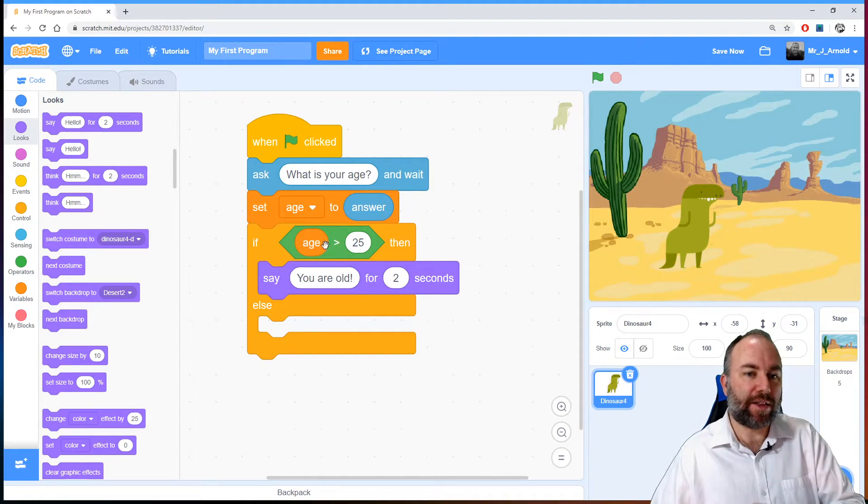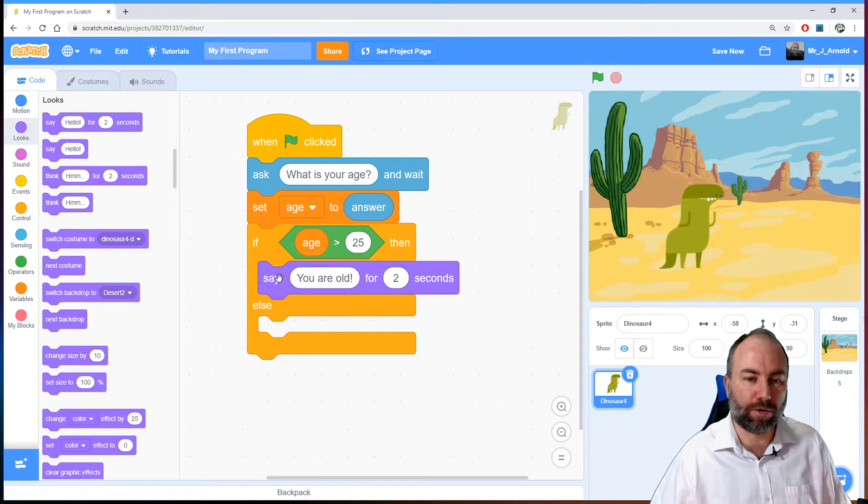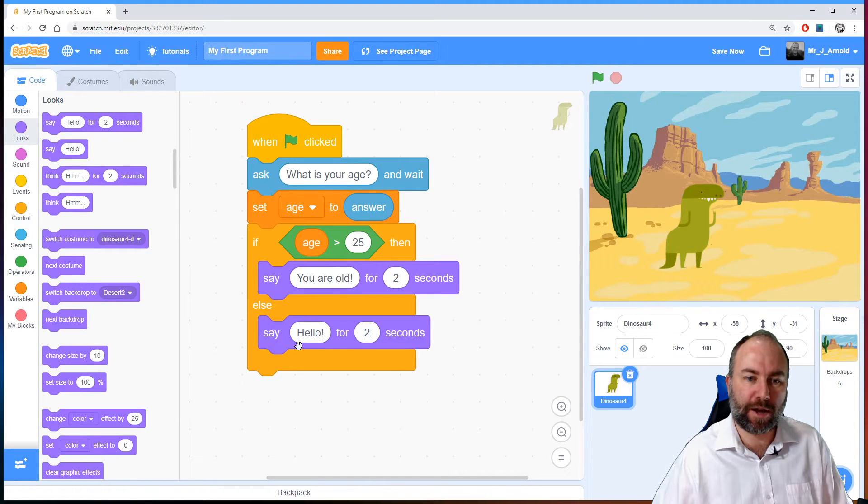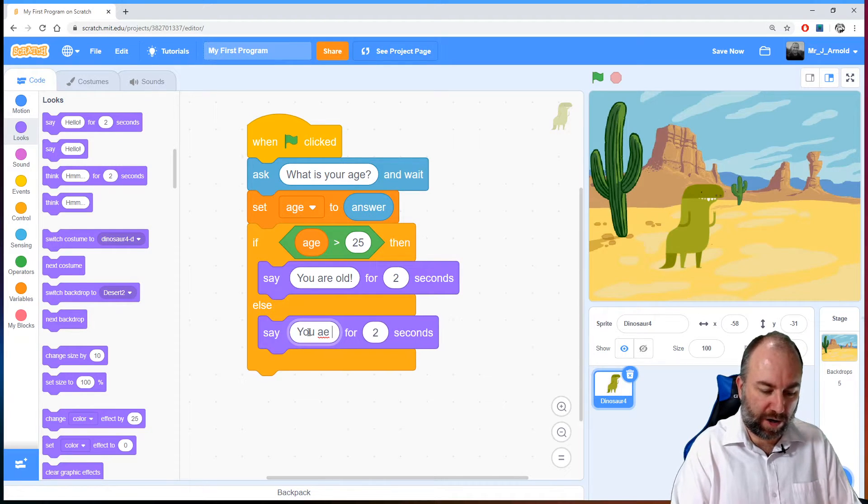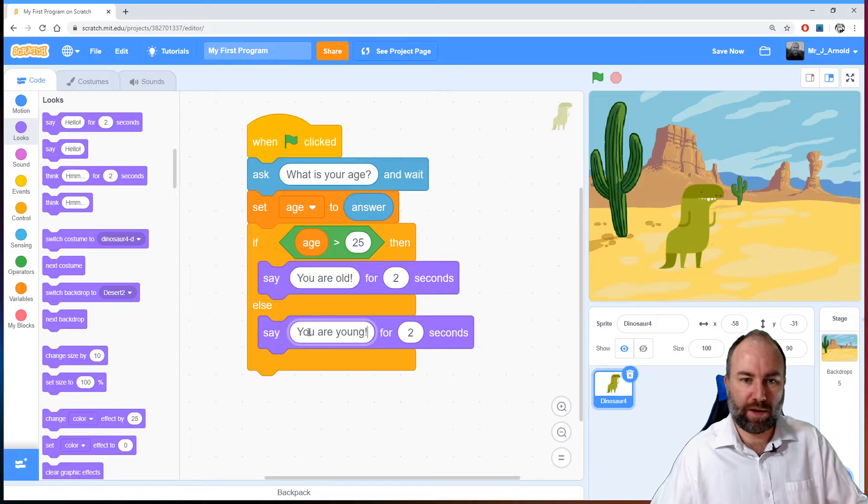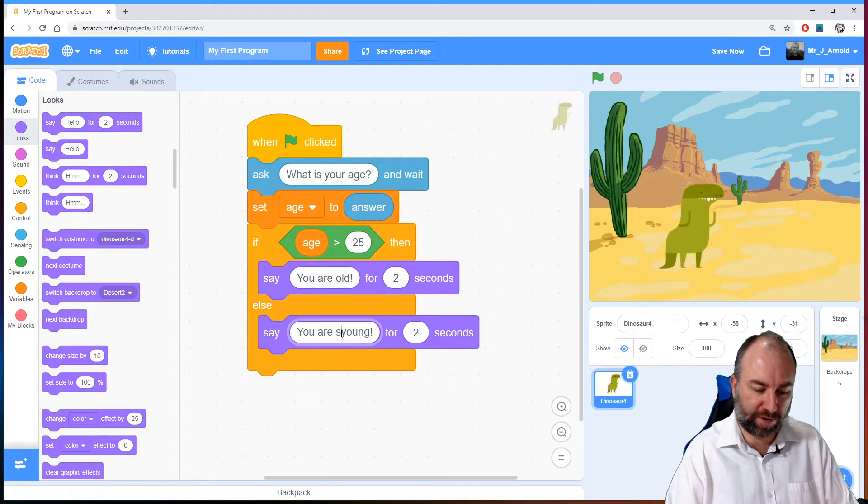There we go. Now we're saying then that if the age is more than 25 then say that they're old. Otherwise we'll tell them they're still young. That's what this else section here is for. So else say they're young. Let's grab that say block. Pop it over here. So we'll then say you are young. You are still young. There we go.